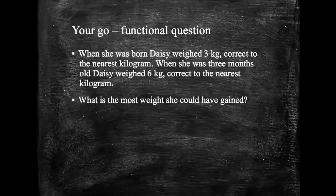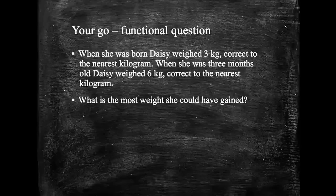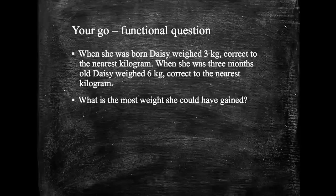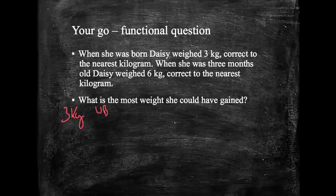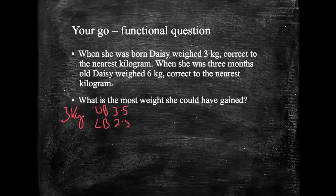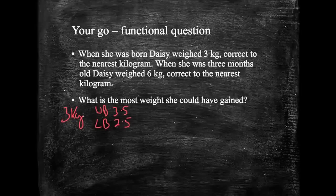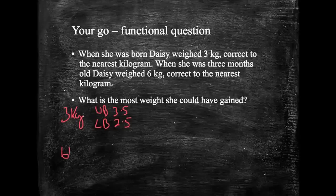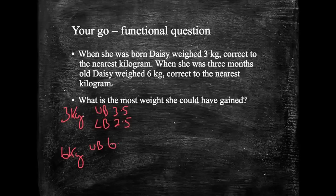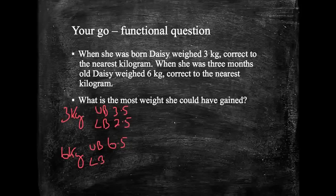Okay. So this time it says when she was born Daisy weighed 3 kilograms correct to the nearest kilogram. So straight away I'm going to start writing things down. So 3 kilograms to the nearest kilogram. She could have been the upper bound 3.5 and the lower bound could have been 2.5. Okay. When she was 3 months old Daisy weighed 6 kilograms to the nearest kilogram. So 6 kilograms. The upper bound could have been 6.5 and the lower bound could have been 5.5.